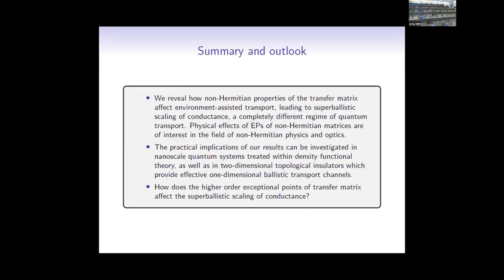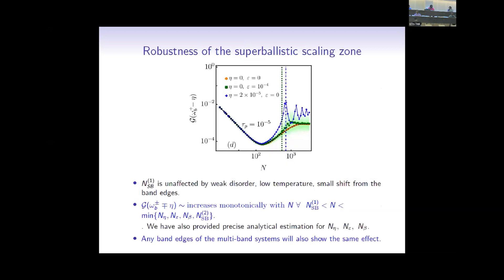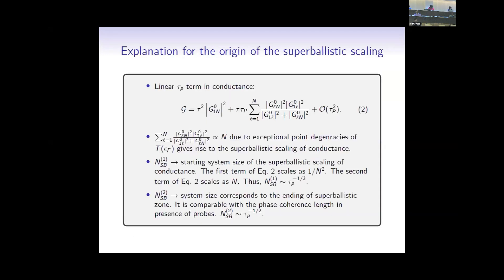Q&A: Is there an intuitive picture for why the conductance shows super-ballistic behavior? Mathematically we have understood which processes give rise to it, but the exact physical reason we have not fully understood. N_SB2 is actually comparable to the phase coherence length, so even in the presence of incoherent effects, coherent transport is happening up to some length scale — that may explain the super-ballistic scaling.